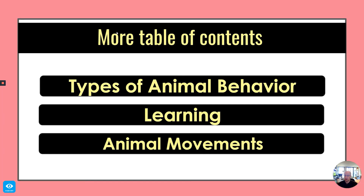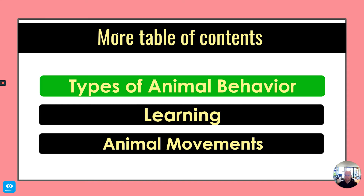So first, let's talk about animal behavior and learning. Here is our table of contents for this specific section: types of animal behavior, learning, and animal movements.